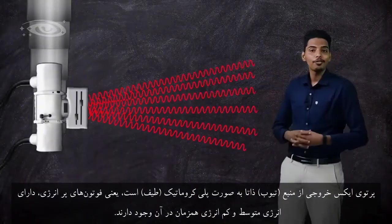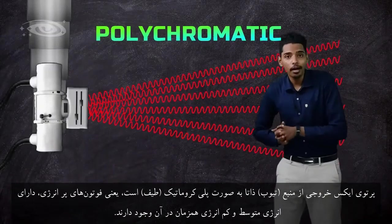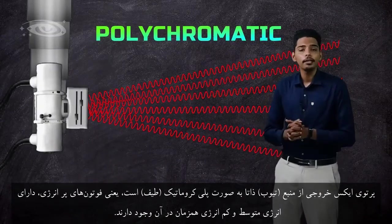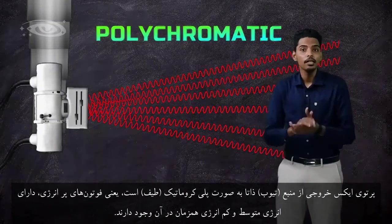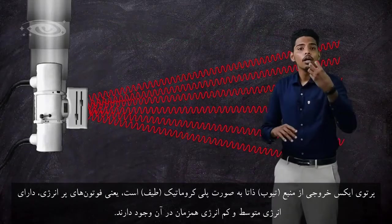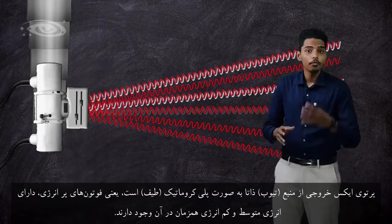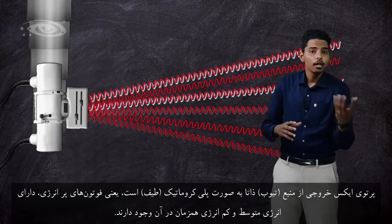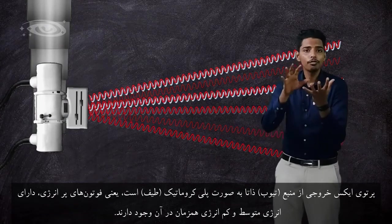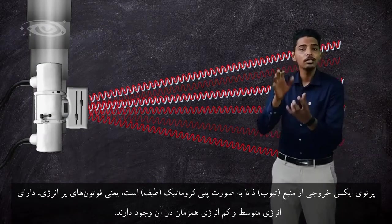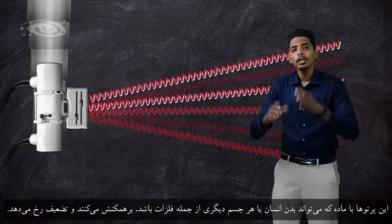The x-rays coming out from the x-ray tube are polychromatic in nature. Polychromatic means there will be a difference in energy — some will be high energy, some will be moderate energy, and some will have low energy x-rays. This combination of differences in energy we call polychromatic.